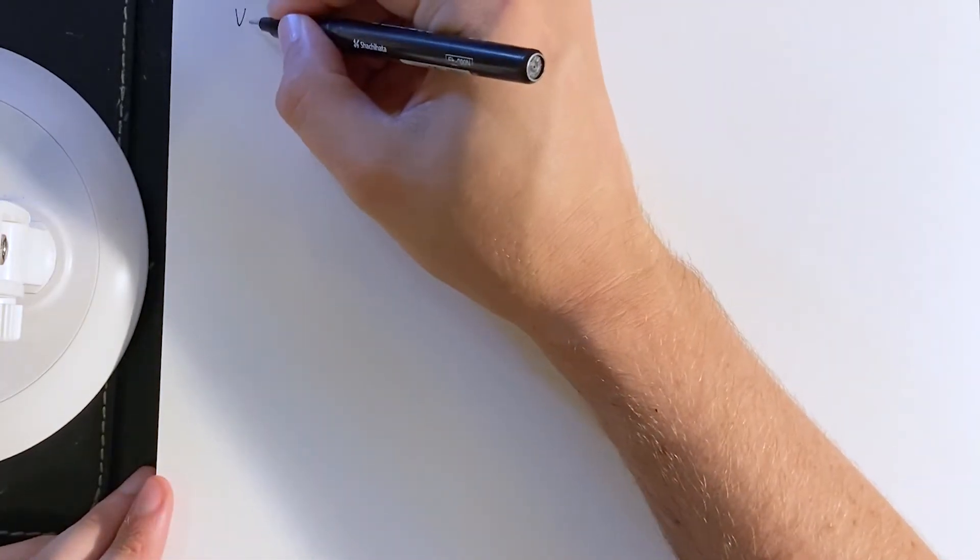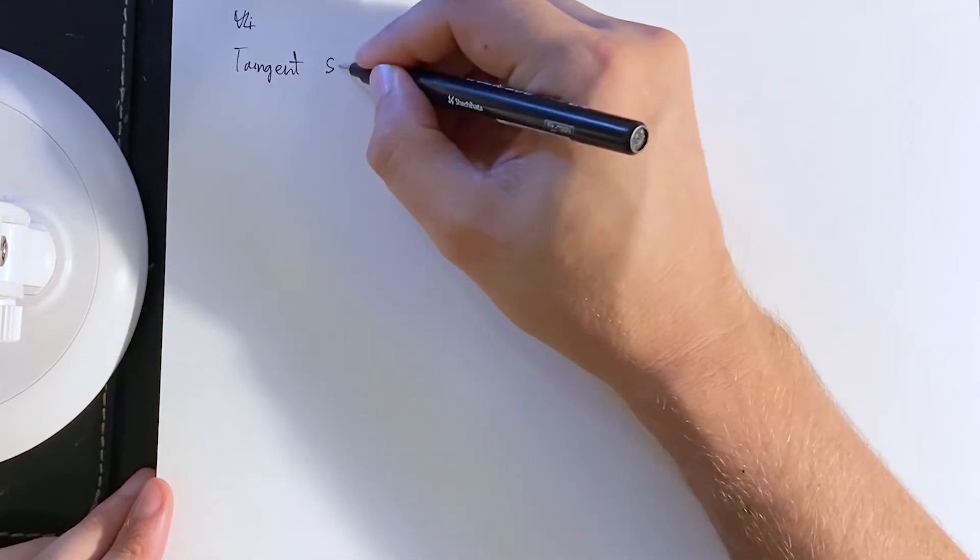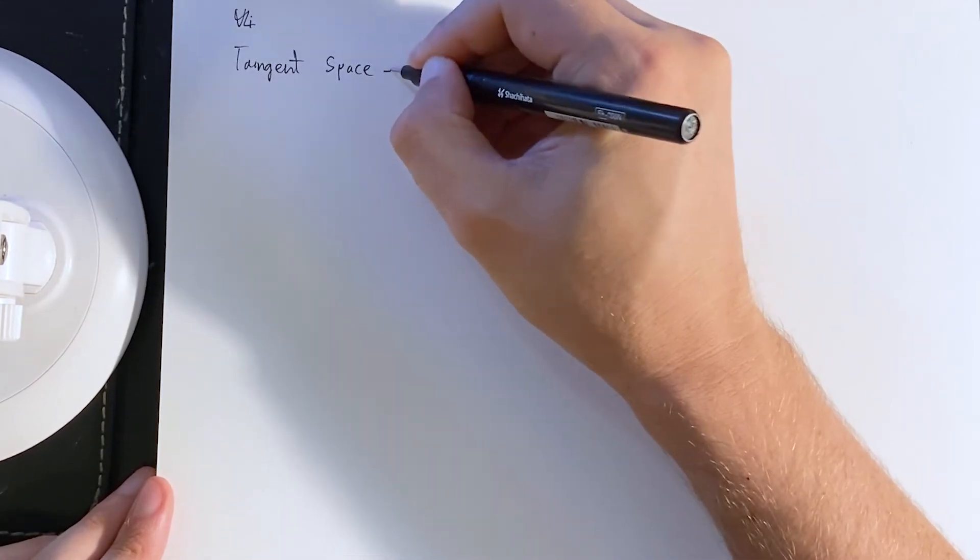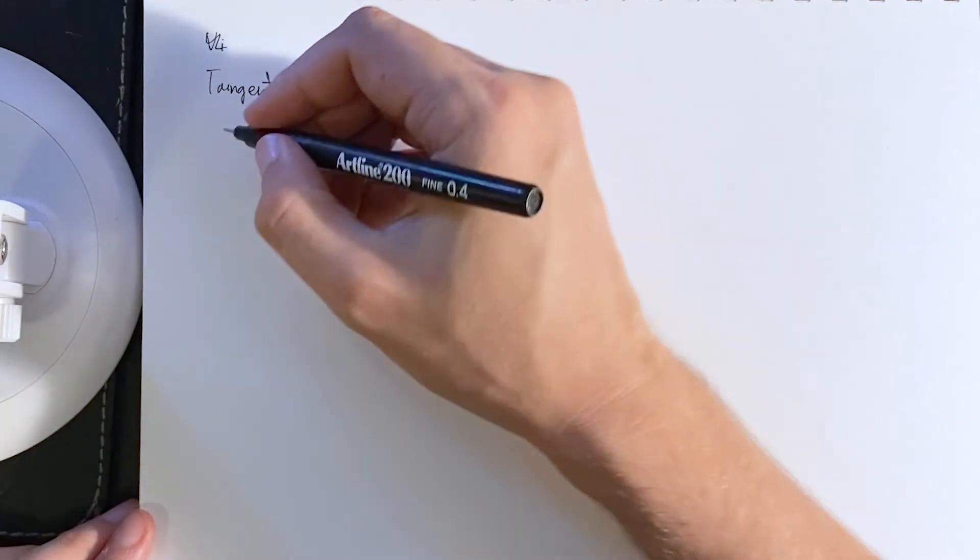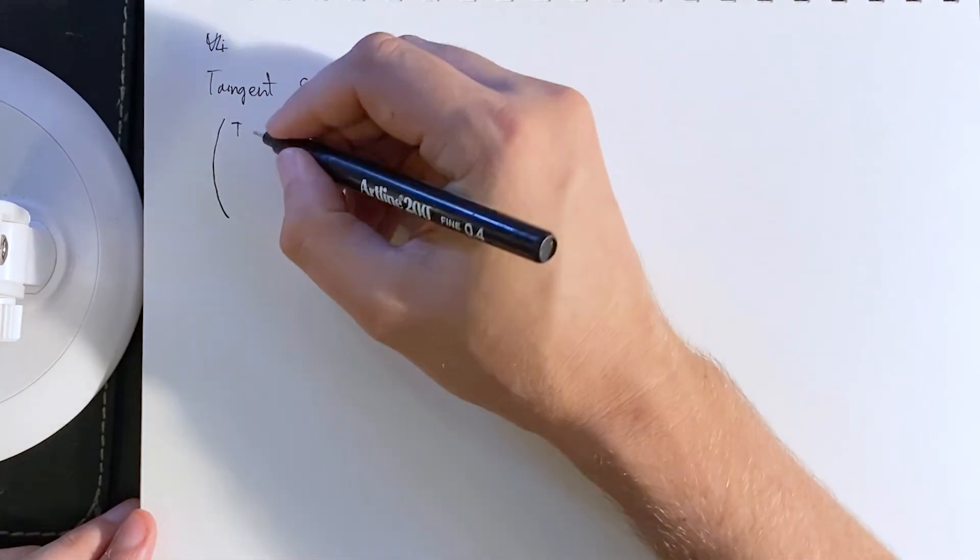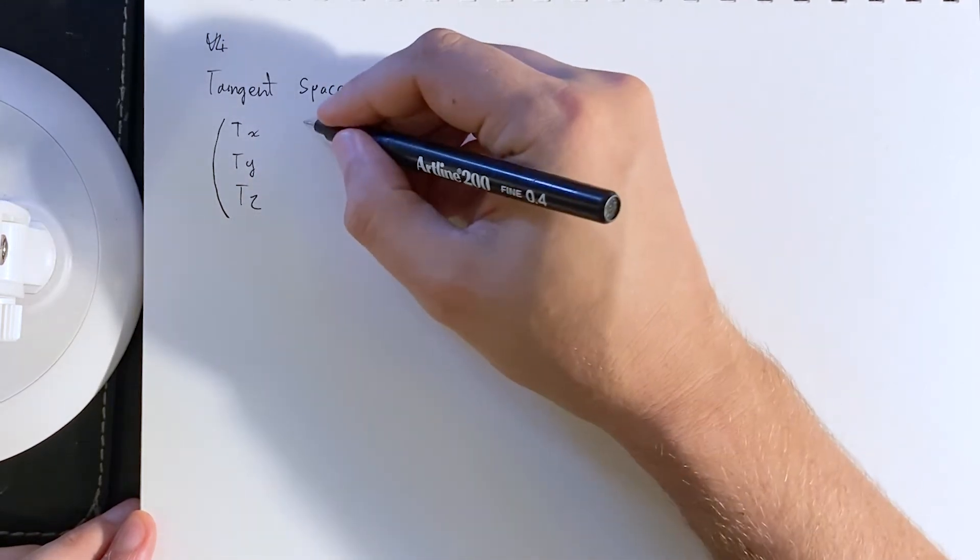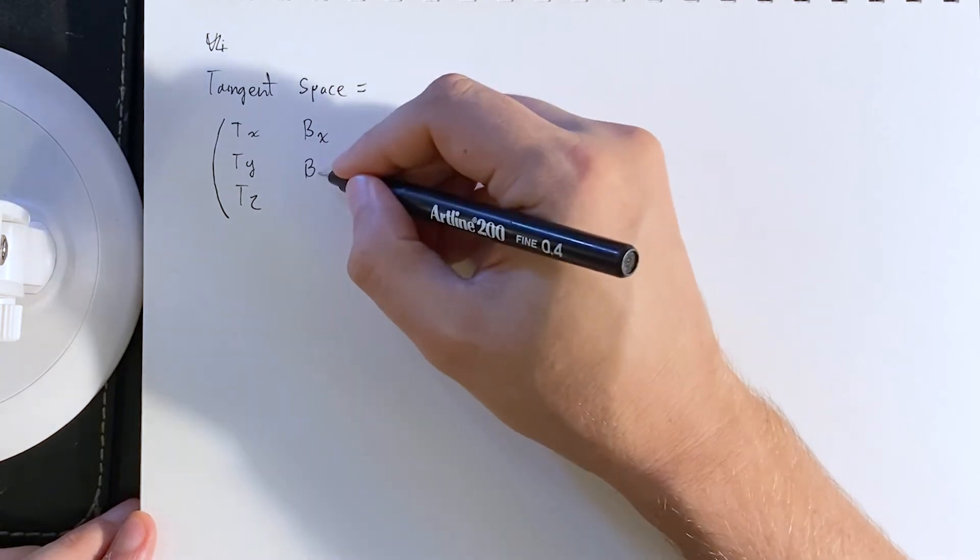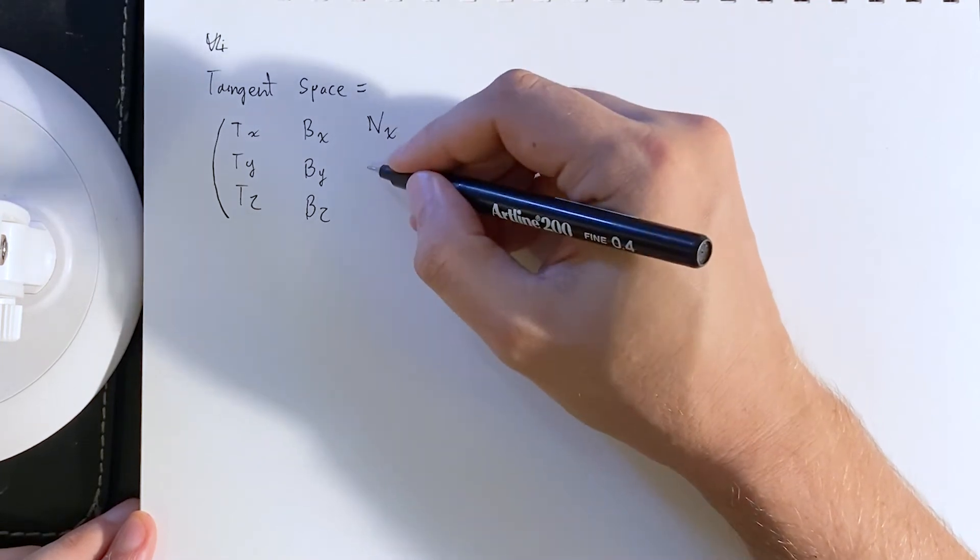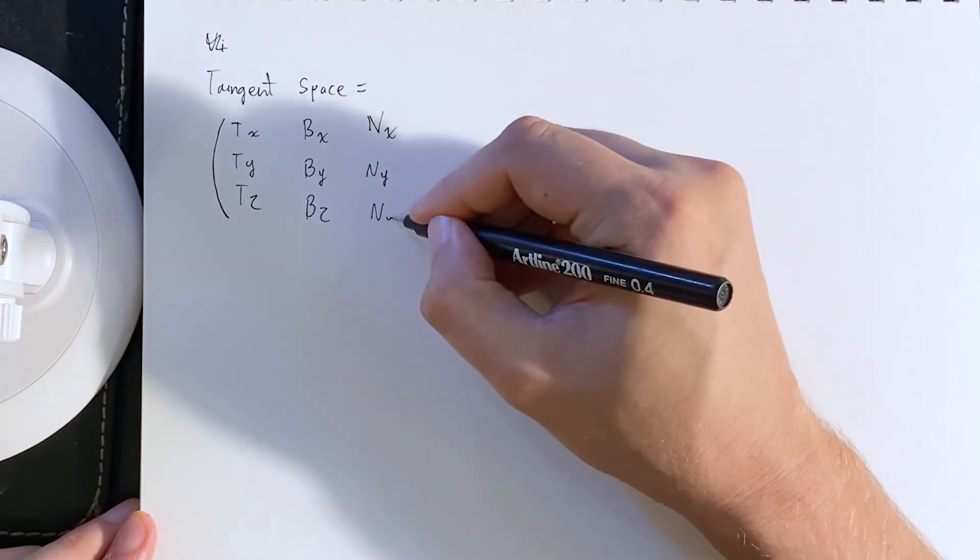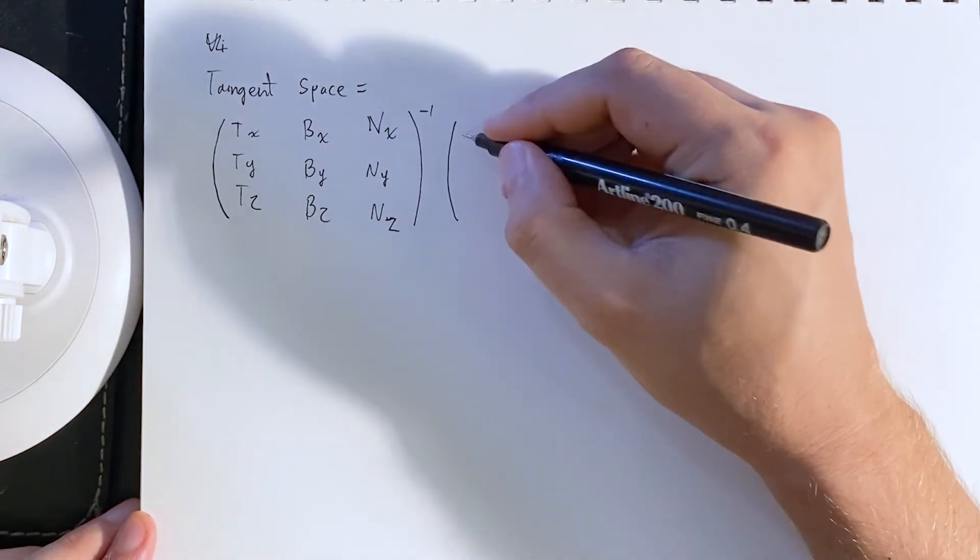Okay. So, let's say we have a position which has an x, y, and z coordinate. We take the tangent, we put it along the first column. Take the bitangent as the second column and the normal as the third column. So, this is the TBN matrix. We take its inverse and apply the position.